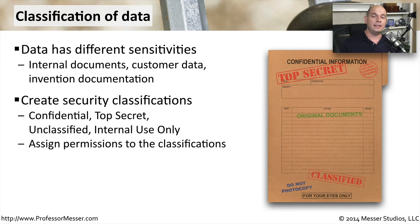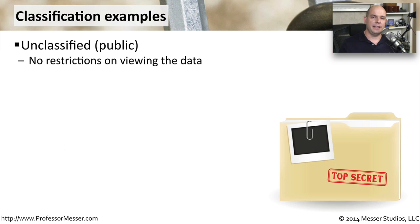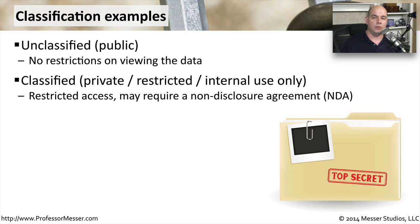We can then apply different permissions based on what those classifications might be. Unclassified data might be public data — something that would be available publicly on our website — and there generally aren't any restrictions for anyone to view it. This is different than classified data, which would be private, or restricted, or internal use only, and may require that someone sign a nondisclosure agreement to even gain access to view that data.